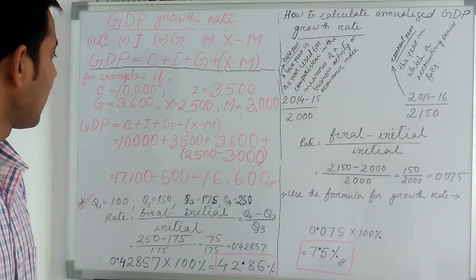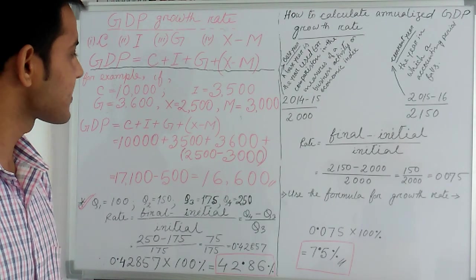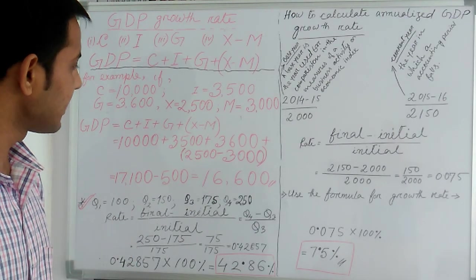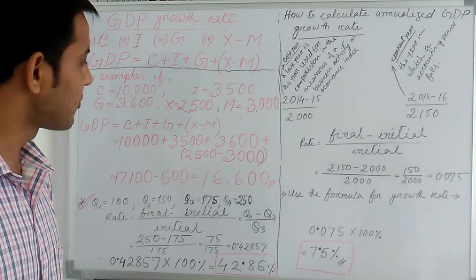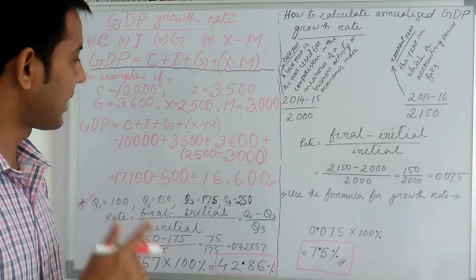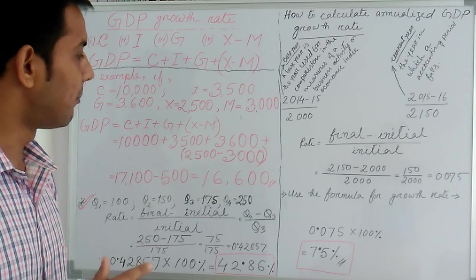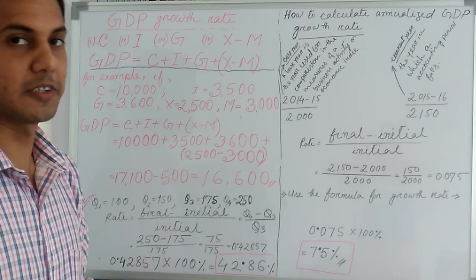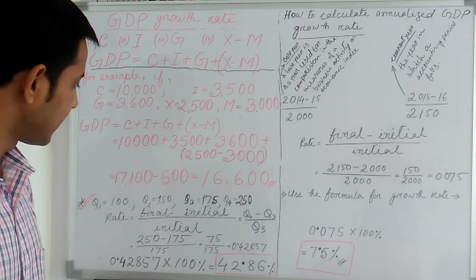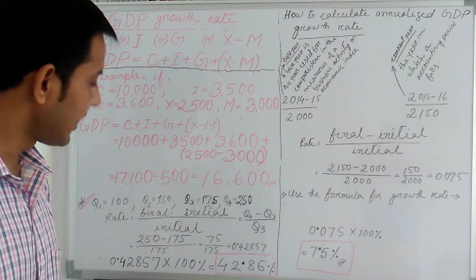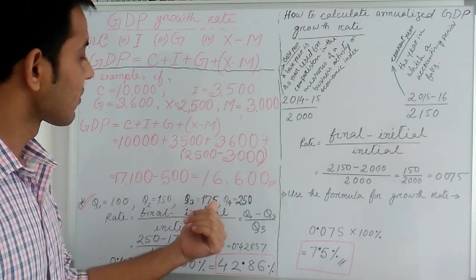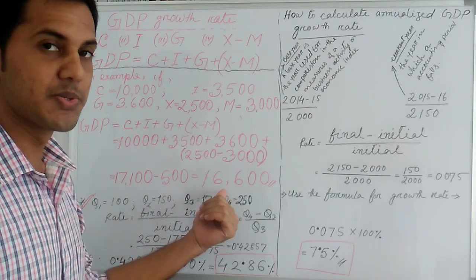So GDP equals C plus I plus Z plus X minus M. Putting these values: 10,000 plus 3,500 plus 3,600 plus bracket 2,500 minus 3,000 equals 16,600. So this is our GDP value.